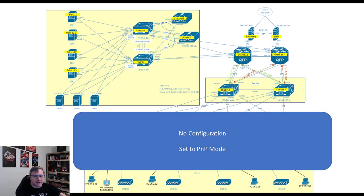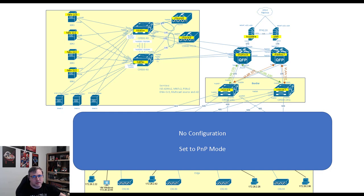What we were talking about at that time was provisioning the SD-Access fabric. Right now, everything southbound of CHEESE6 and CHEESE7 is in PNP mode, meaning Cisco plug-and-play mode. For those unfamiliar with plug-and-play mode, what we're talking about is basically mint-in-box — it has no certificates, no VLANs, just like it came out of the box, and when it comes out of the box, it comes in PNP mode.